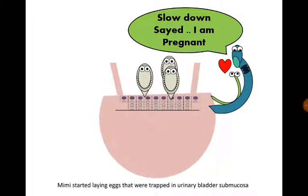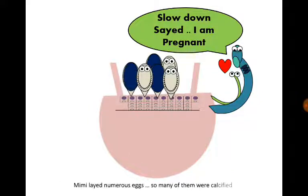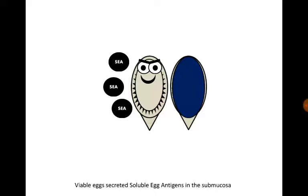Mimi started laying eggs that were trapped in the urinary bladder submucosa. Mimi laid numerous eggs, so many of them became calcified. Viable eggs secrete soluble egg antigens in the submucosa.